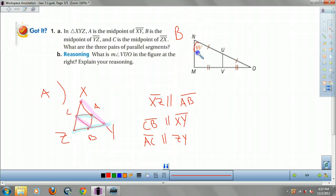This angle is 65 degrees, right? We're looking for VUO, this one right here. Well, remember, these are parallel. Parallel lines cross by transversal. This is lower right. Lower right. They're corresponding angles.